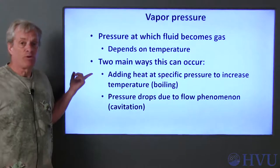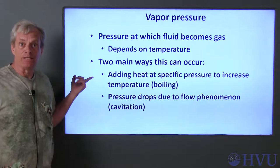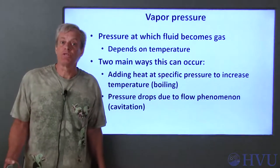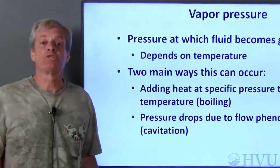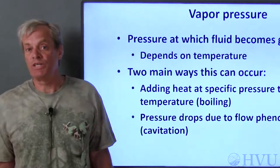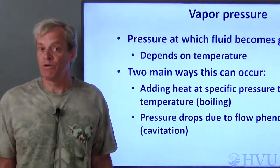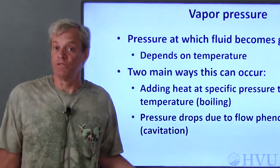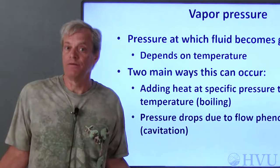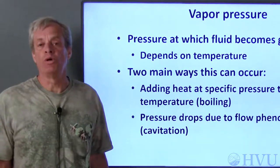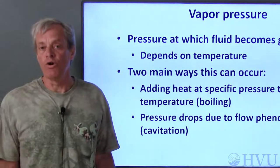First, we can keep the pressure constant and increase the temperature. Once the temperature is high enough so that the vapor pressure exceeds the pressure of the fluid, the fluid turns to gas. This is what happens when we boil water on the stove.